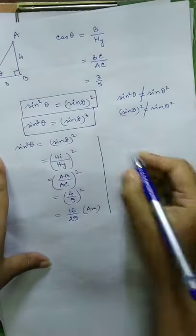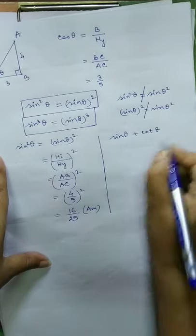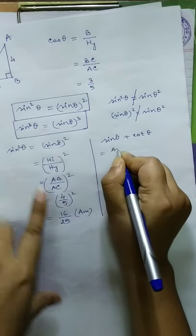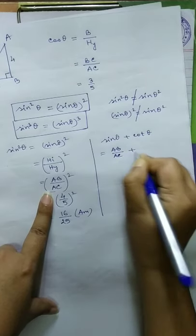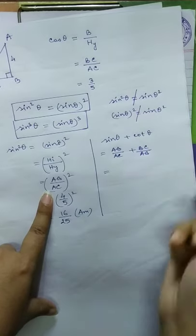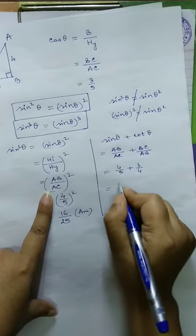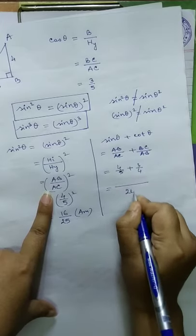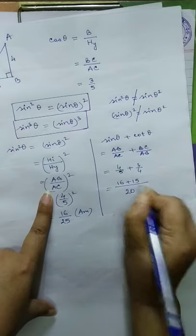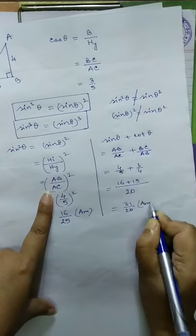Now suppose we have to find sin theta plus cot theta. Sin theta equals AB by AC, and cot theta equals BC by AB. Putting in the values and taking LCM — the LCM of 5 and 4 is 20 — we get 16 plus 15, which gives 31 by 20. That is your answer in this case.